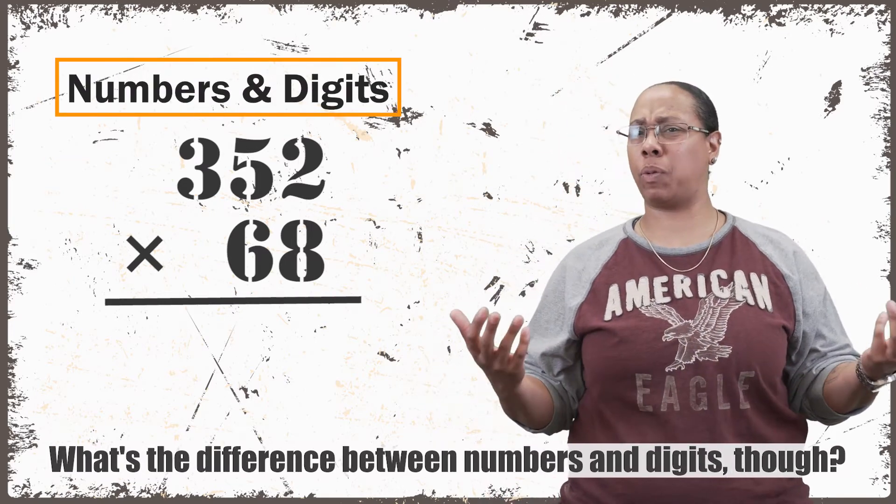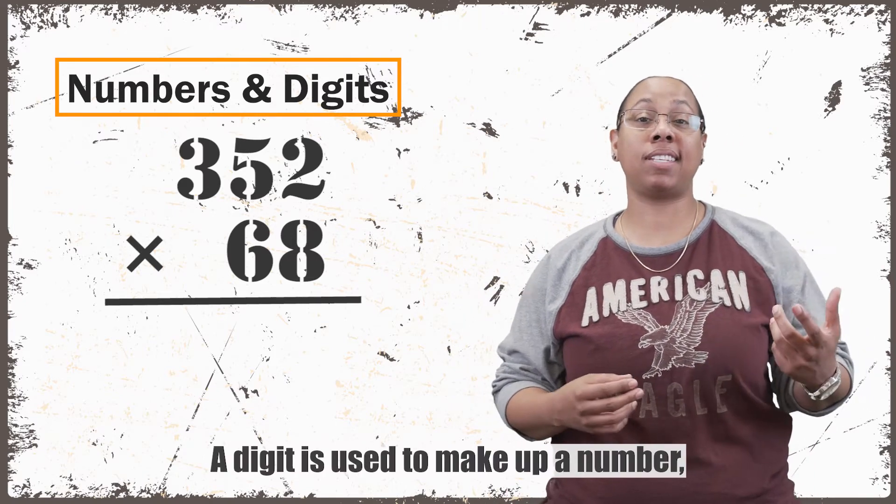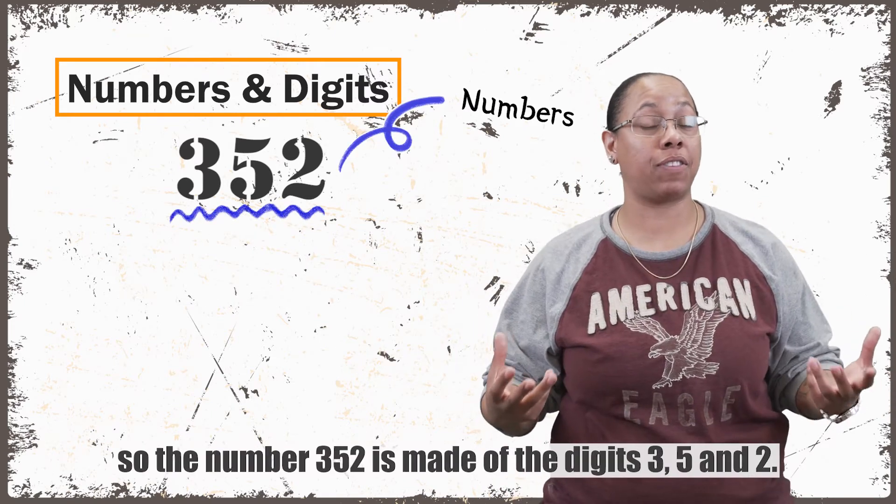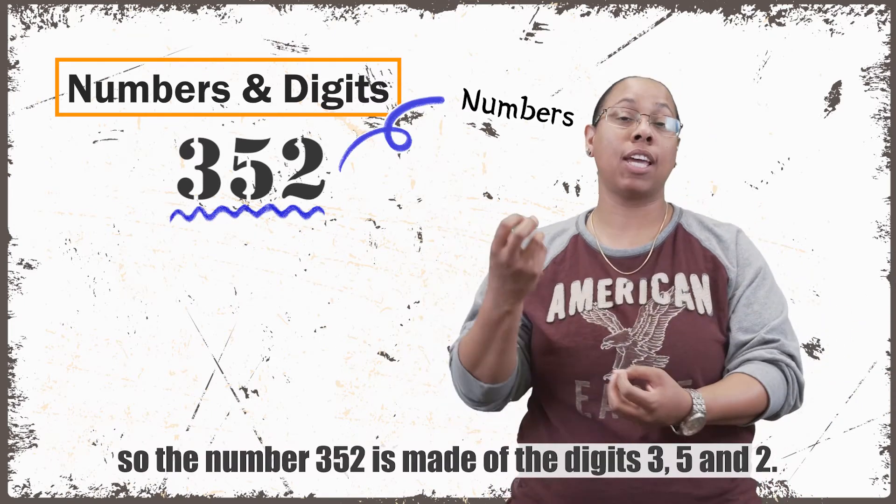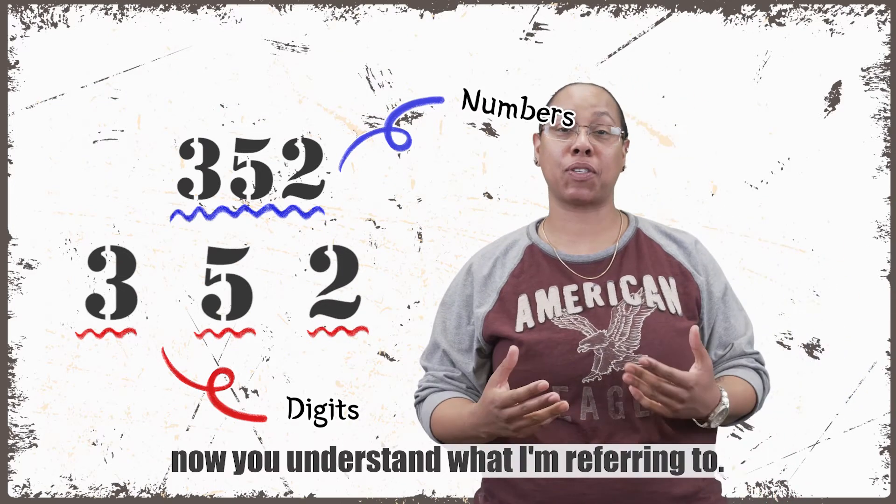So what's the difference between numbers and digits? A lot of people don't know, so I'll explain that real quick. A digit is used to make up a number. So the number 352 is made of the digits 3, 5, and 2. So when I say digits and numbers, now you understand what I'm referring to.